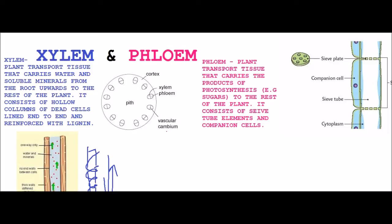And the vascular cambium, or just the cambium, is the line in between. The cortex is just like this bit, just around, and the pith is in the centre. Okay, so now the phloem.